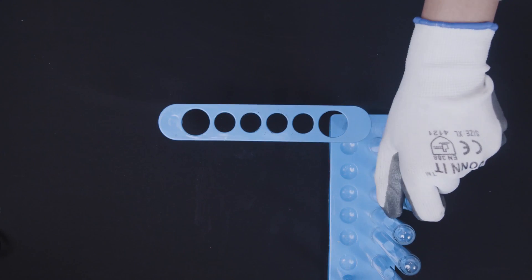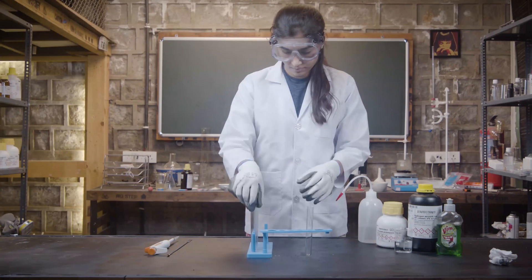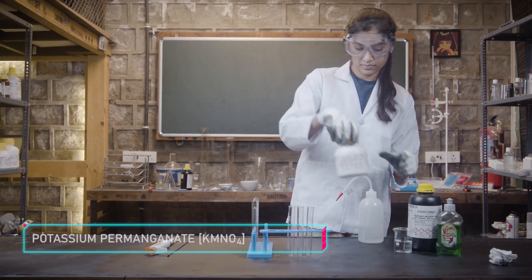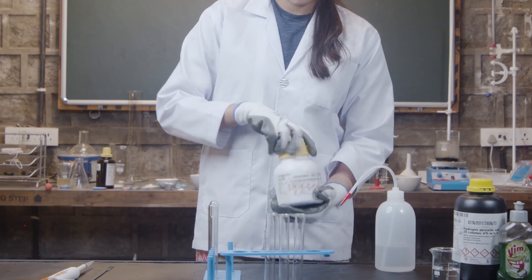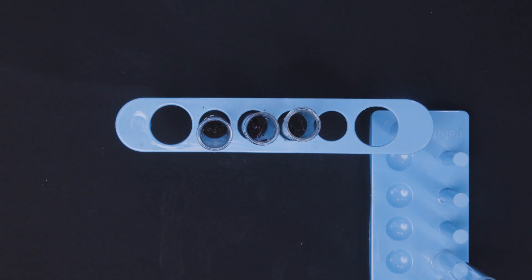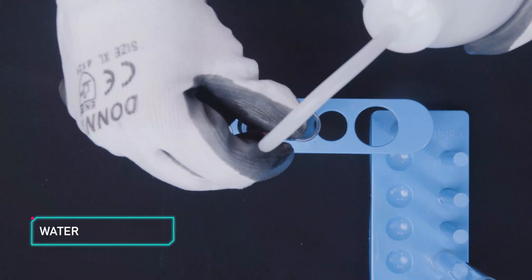This time, take three test tubes and to be on the safer side, put them in a stand. Now, put a little potassium permanganate in the three test tubes. Next, skip the first tube and pour a little water into the other two tubes.